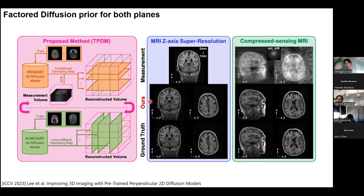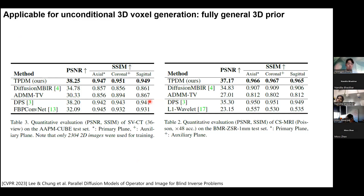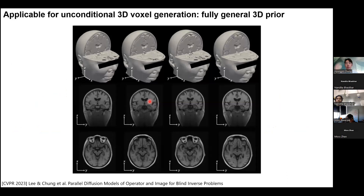In the follow-up paper TPDM, we further improve 3D reconstructive performance by throwing away the TV prior and modeling the 3D prior as the product of two perpendicular two-dimensional priors. Due to the higher expressivity of these diffusion priors, we observe a dramatic performance gap against the previous approach, with a much simpler inference algorithm since we no longer need the ADMM-TV optimization. Since the proposed method is a fully general three-dimensional prior, we can also perform unconditional sampling from the prior distribution, achieving state-of-the-art performance without a model trained from three-dimensional data directly.